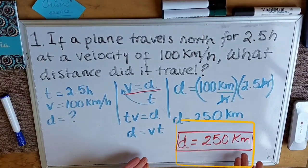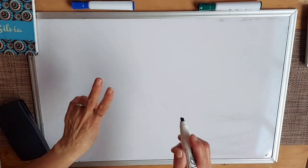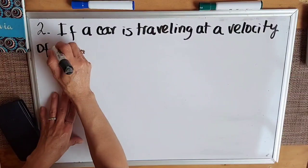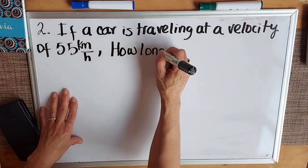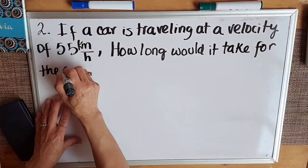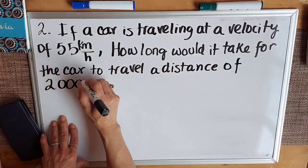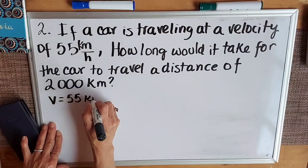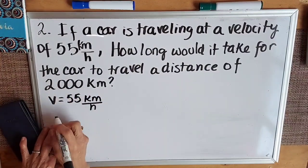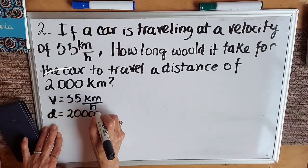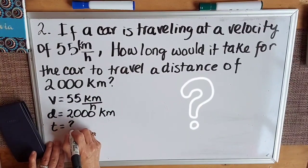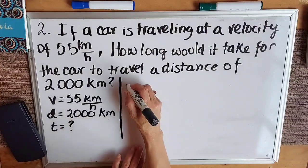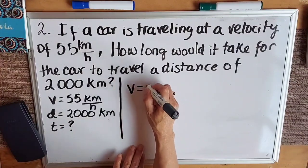Okay, it's very easy! Let's continue with the second problem. If a car is traveling at 55 kilometers per hour, how long would it take for the car to travel a distance of 2,000 kilometers? The first step is to write the data: velocity equals 55 kilometers per hour, distance equals 2,000 kilometers, and time equals question mark. In this problem we need to use the formula of velocity: velocity equals distance over time.